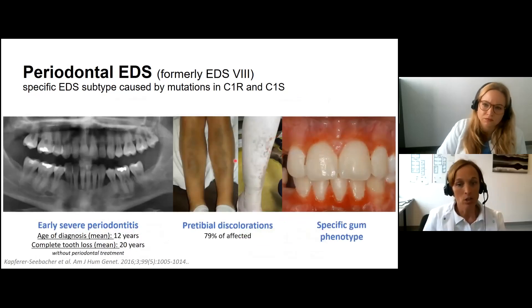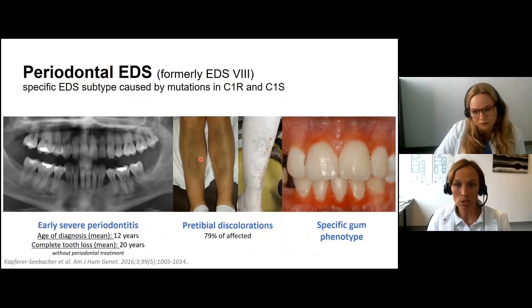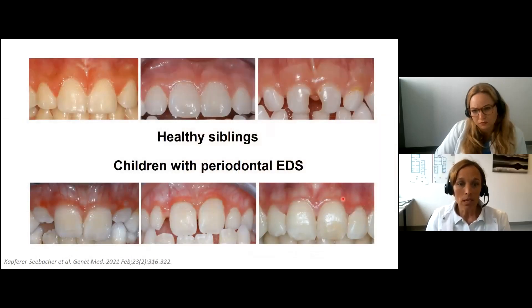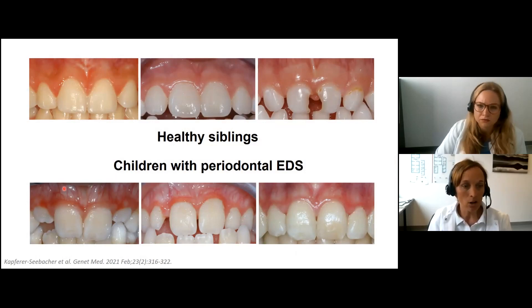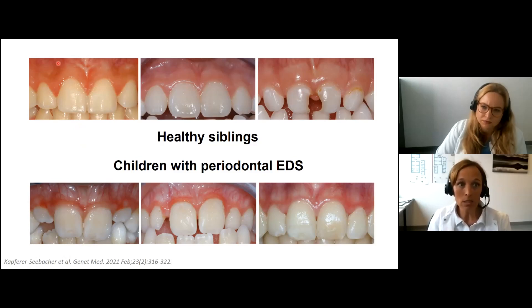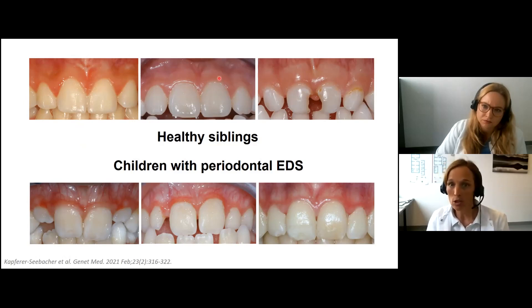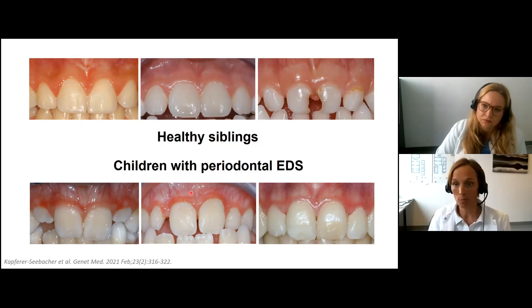Other main characteristic features of periodontal EDS are pre-tibial discolorations and a specific gum phenotype. Children with periodontal EDS have very thin and fragile gums — the vessels are clearly visible because the gums are so thin. In healthy siblings, you cannot see the vessels shining through because they have a thick band of keratinized gingiva fixed with collagen to the periosteum. This thick band of gingiva is missing in children with periodontal EDS, and this seems to be a pathognomonic feature of the condition.